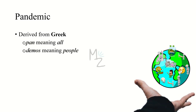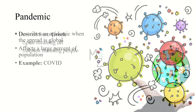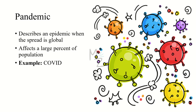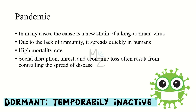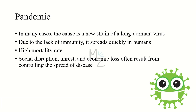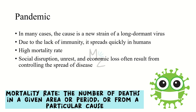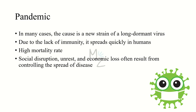Pandemic — you might be familiar with that term because of COVID recently. It is also derived from Greek: 'pan' means 'all,' and 'demos' means 'people.' So pandemic describes an epidemic when the spread is global. A disease is pandemic if it has a worldwide distribution and affects a large percent of the population — for example, COVID-19. In many cases, the cause is a new strain of a long-dormant virus; due to lack of immunity it spreads quickly in humans, resulting in high mortality. Social disruption, unrest, and economic loss often result from controlling the spread.